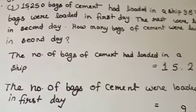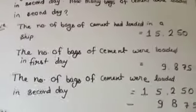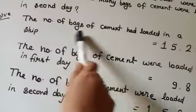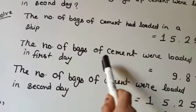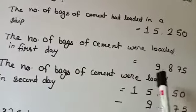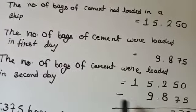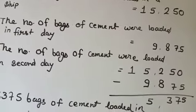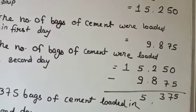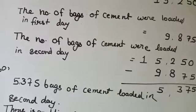How many bags of cement were loaded on the second day? The total number of bags of cement loaded is 15,250. The number of bags loaded on the first day is 9,875. To find the second day, we subtract: 15,250 minus 9,875. You will get 5,375 bags of cement loaded on the second day.